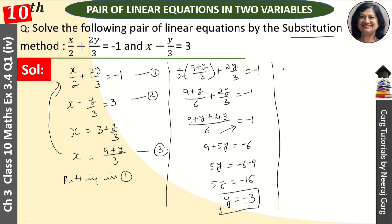Putting in equation 3, x = (9 + y)/3 = (9 + (-3))/3 = 6/3, and x = 2. This is our value.